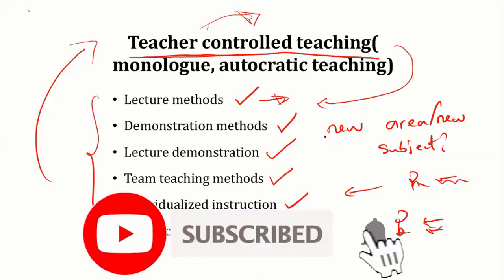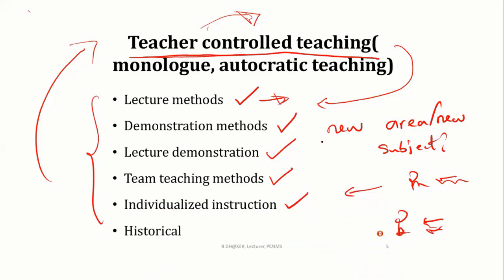When we teach a new area or new subject where the students don't have any knowledge, teacher-controlled teaching is the best method. Because they don't know anything about the new subject, we have to take the class in our own way — as a teacher, we have to continue the class. So in that case, this method is useful.